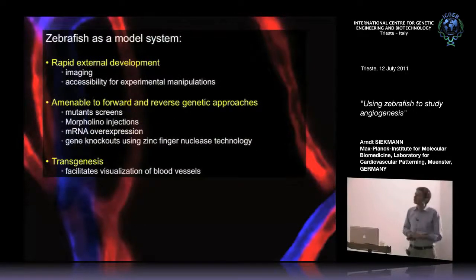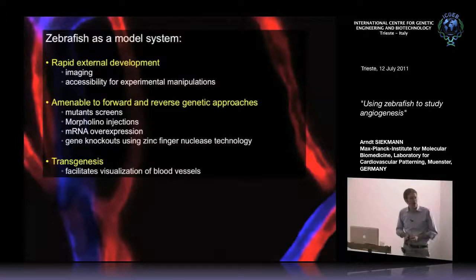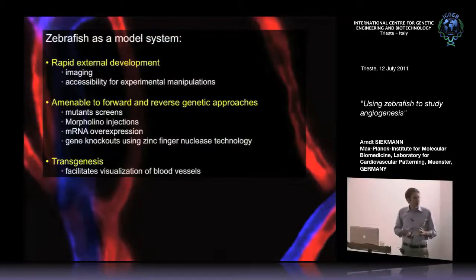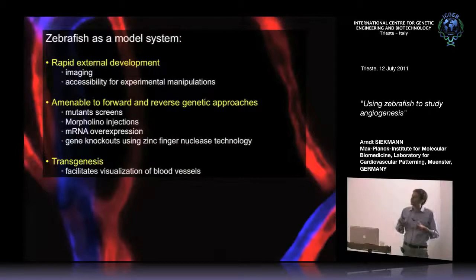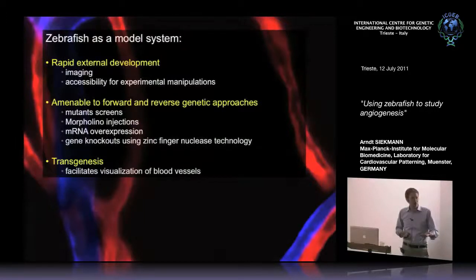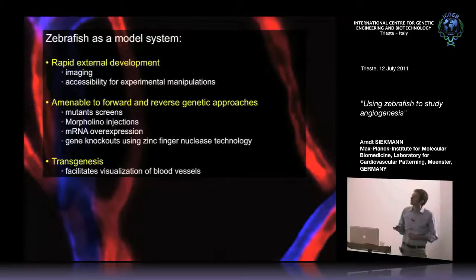The model we use is the zebrafish, because it has key advantages. It has very rapid external development. The embryo develops externally, so unlike the mouse embryo inside the mother, which you cannot image or easily manipulate, the fish is in the water. It's transparent, so you can beautifully film how the vessels form, and you can also transplant cells.